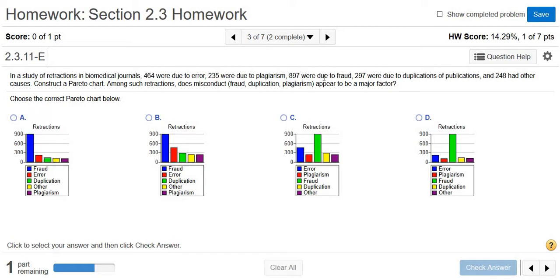897 is the biggest number, so that's fraud. So fraud has to be the biggest one. In both cases that's okay. The second biggest one is error. So error has to be the second biggest one. So red is error.